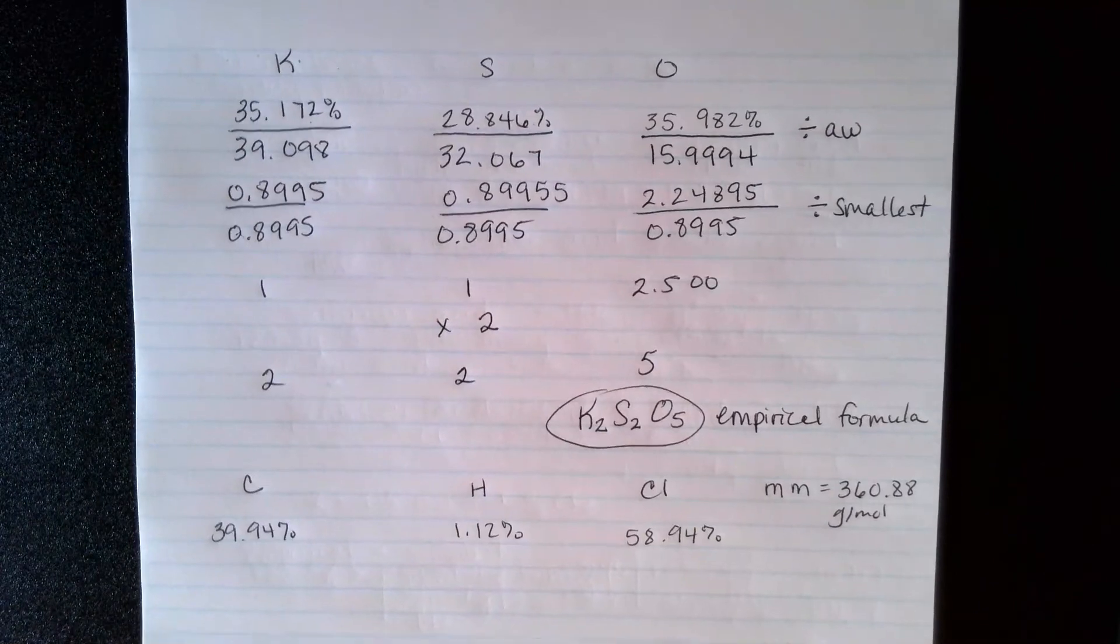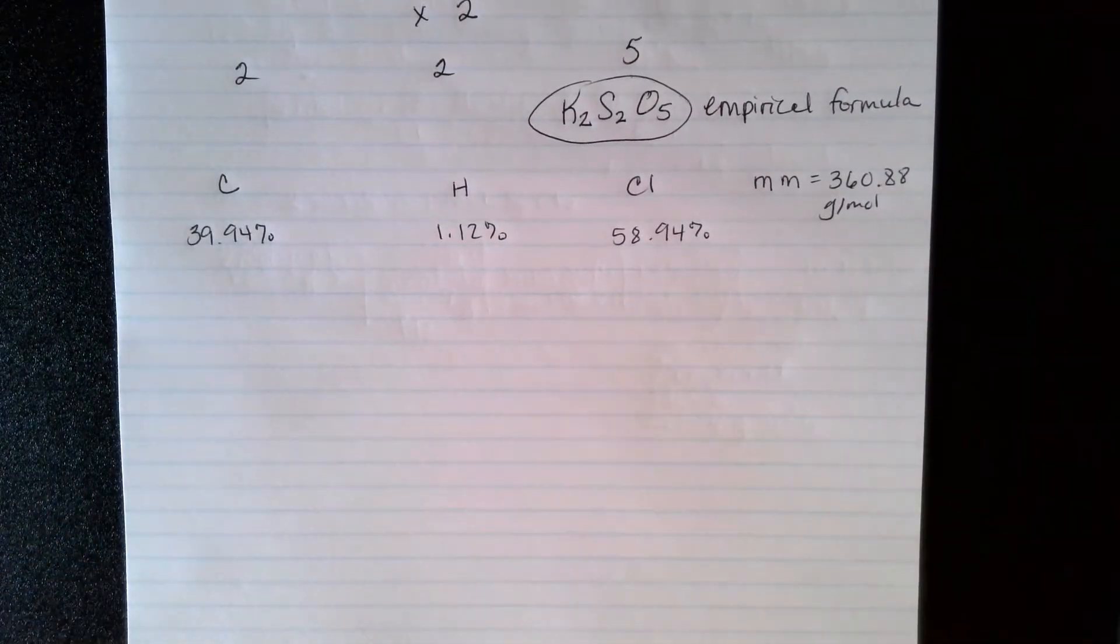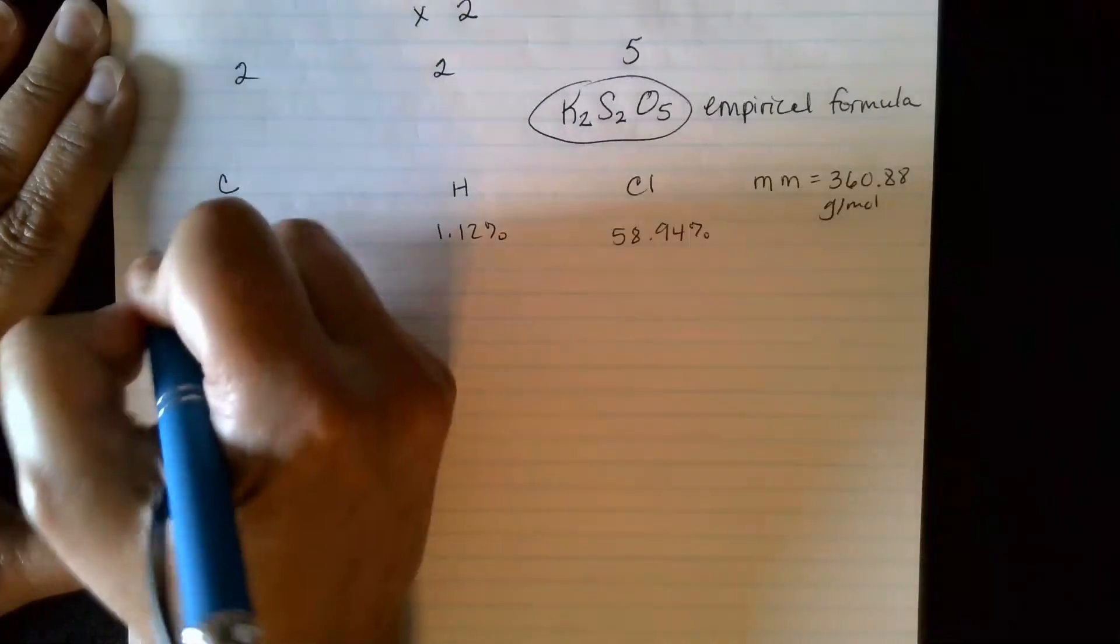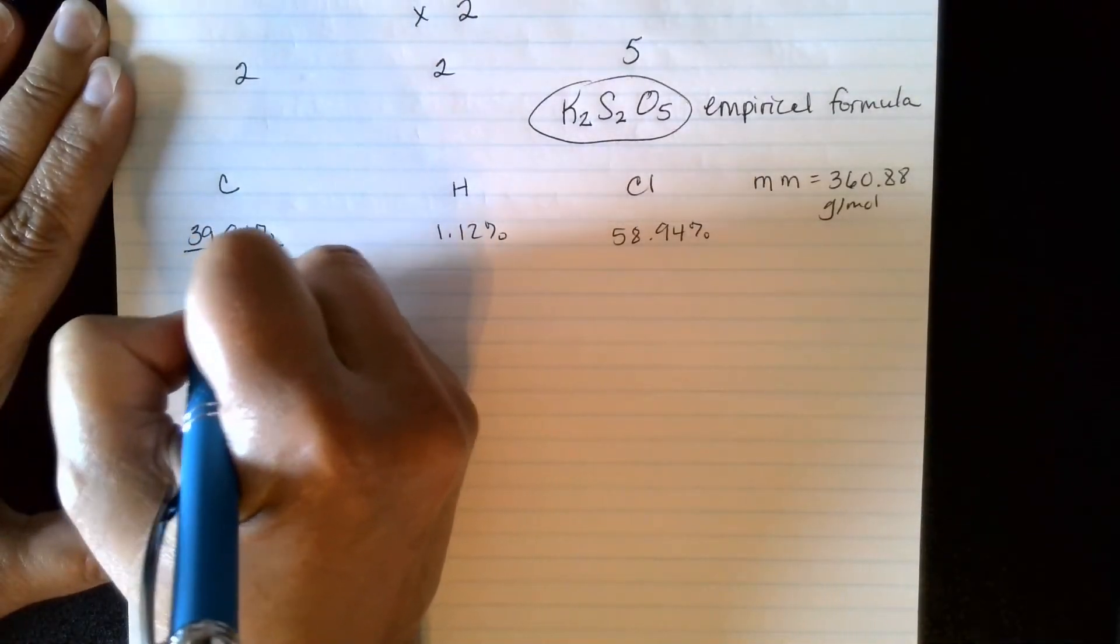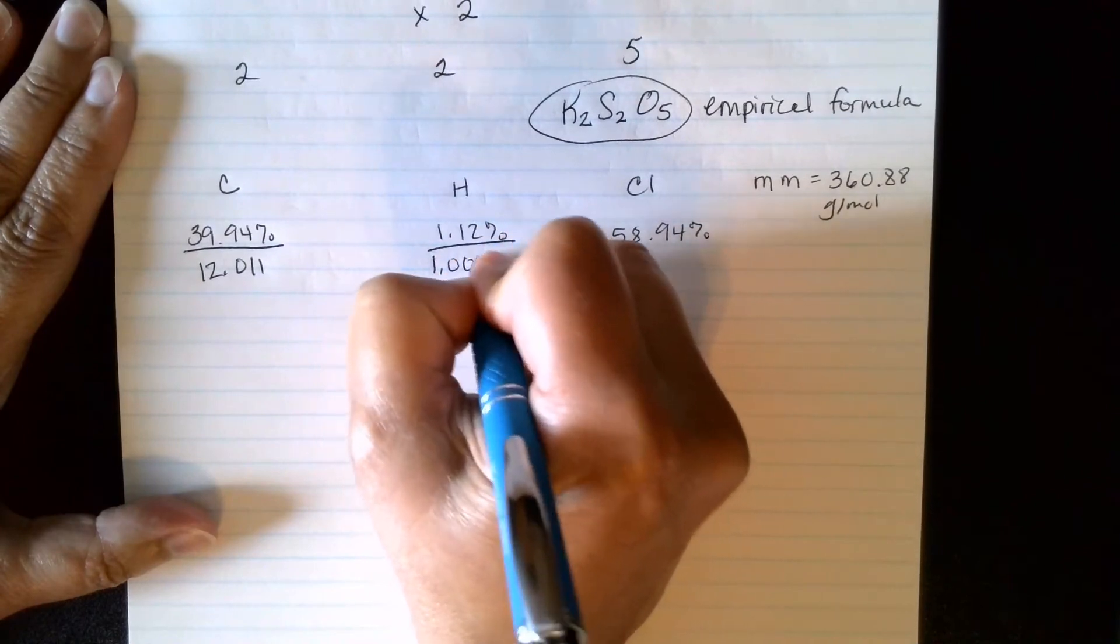Now in my second example, they've given me the same thing, but this time they want me to find the molecular formula. So I still have to go through and find my empirical, so divide by the masses of the periodic table.